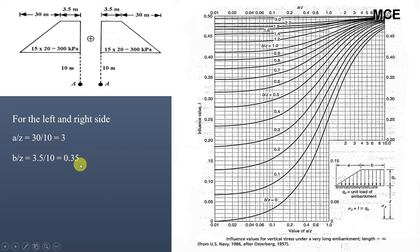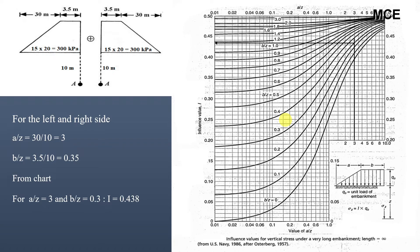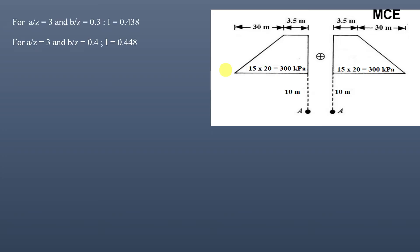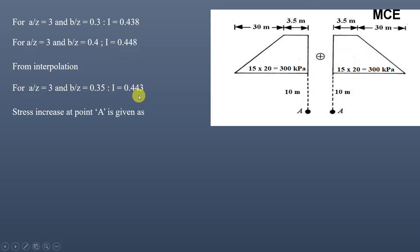The Osterberg chart has curves for b/z = 0, 0.1, 0.2, and 0.3, but not for 0.35, so we interpolate between 0.3 and 0.4. From the chart, for a/z = 3 and b/z = 0.3, the influence factor I = 0.438; for a/z = 3 and b/z = 0.4, I = 0.448. By linear interpolation, for b/z = 0.35, I = 0.443.